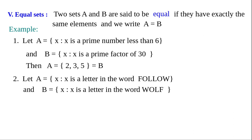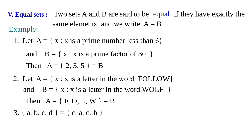Another example: A equals the set of letters in the word 'follow' and B equals the set of letters in the word 'wolf' — both contain the same letters, so A = B. Another example: {a, b, c, d} equals {c, a, d, b} because in roster form elements can be listed in any order. Also, {1, 2} equals {1, 1, 1, 2, 2} because repeated elements are counted only once.